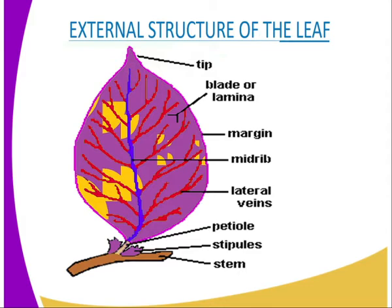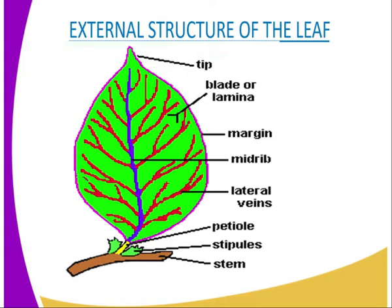On our diagram you can see a diagrammatic representation of the leaf. It has several parts which include the tip — the sharper part of the leaf. We also have the blade, also known as the leaf lamina. The blade is the flat surface of the leaf which is green in color. We also have the margin, which is the outer part of the leaf. We also have the midrib, which runs at the center of the leaf, joined by the lateral veins.